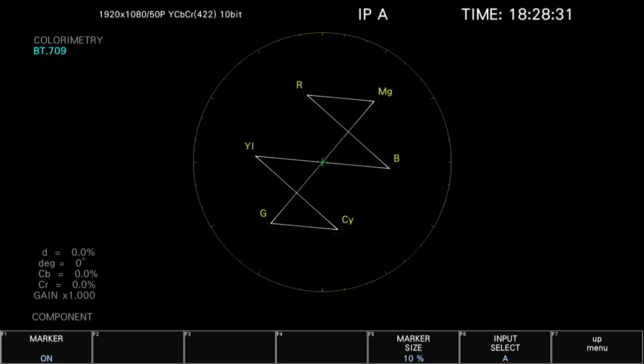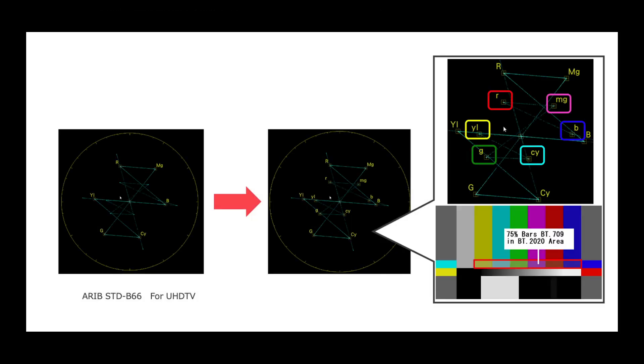The Leader Zen series also supports a marker display which allows you to move the cursor on the vectorscope trace and display the distance from the center as a percentage, hue as an angle, and CB and CR positions as a percentage to give you accurate measurement capabilities.